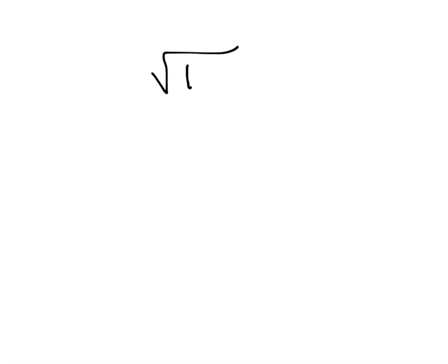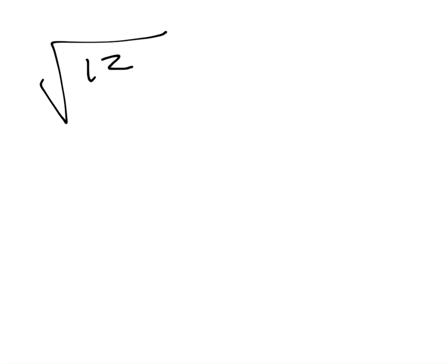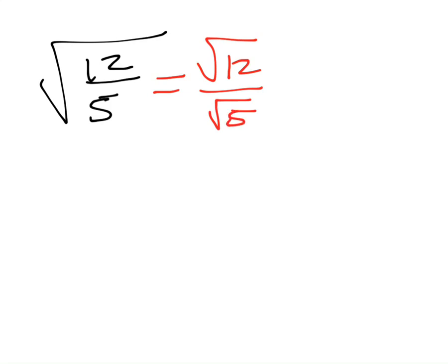Let's look at another one. Say you have the square root of 12 fifths and I want to simplify this. One of the properties says if you have division under the square root symbol you can break it up into multiple square roots — and the only problem with this is we have a square root in the denominator.